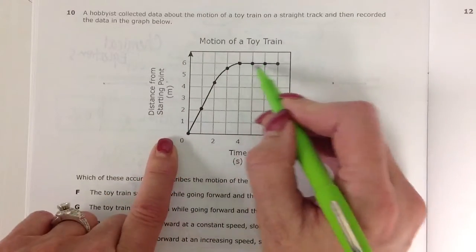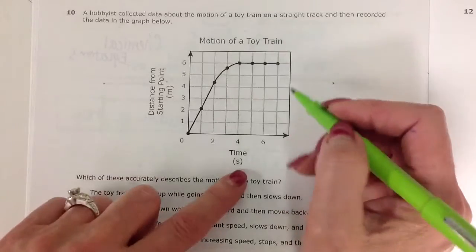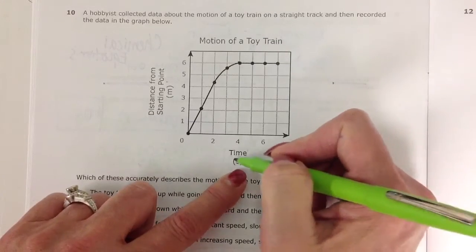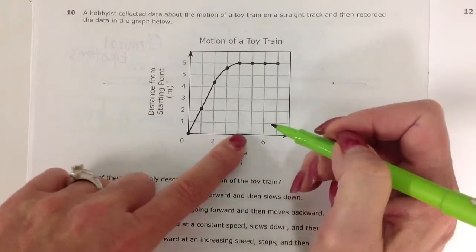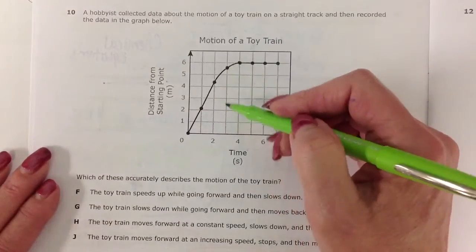That's where it kind of leveled out. It didn't go any further. And the time at what time it got to each different position.